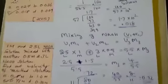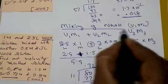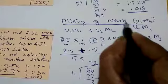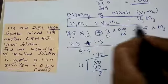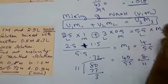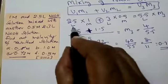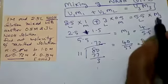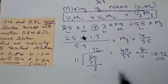The key point here is that both chemicals are sodium hydroxide, so we apply the law of mixing. First write the formula V₁M₁ + V₂M₂ = V₃M₃. All volumes are in liters, so follow the substitution and you get the answer.